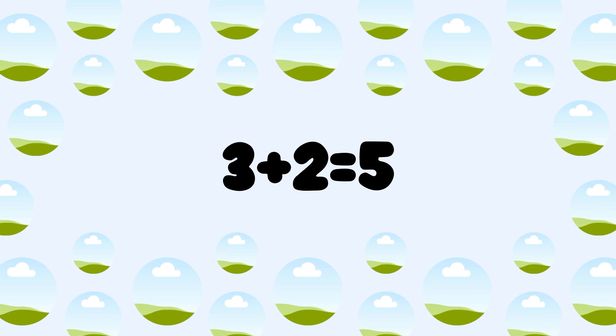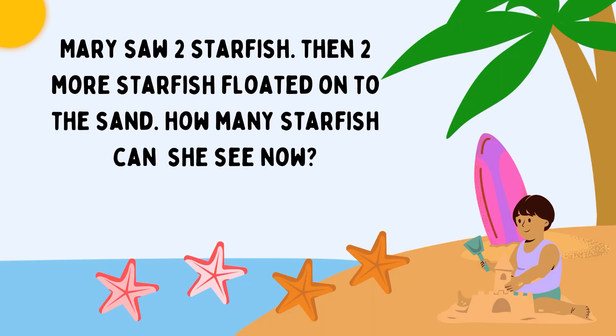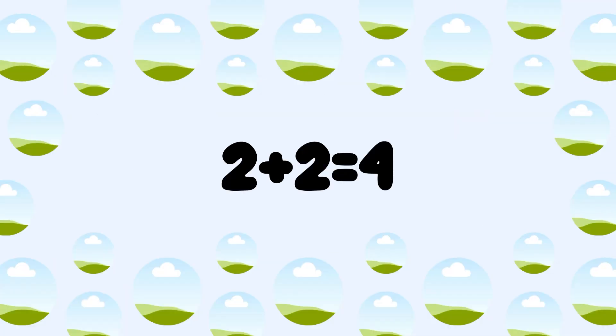Next one. Mary saw 2 starfish. Then 2 more starfish floated on the sand. How many starfish can she see now? Mary saw 2 starfish plus another 2 starfish. 2 plus 2 is equal to 4. Total 4 starfish.